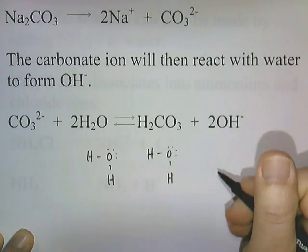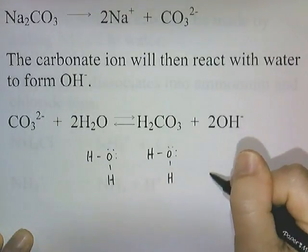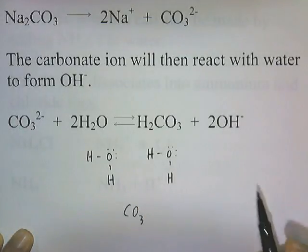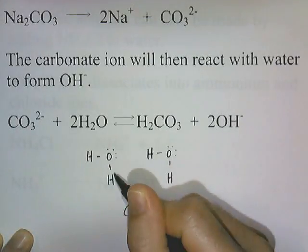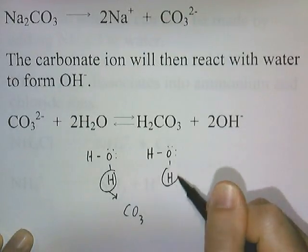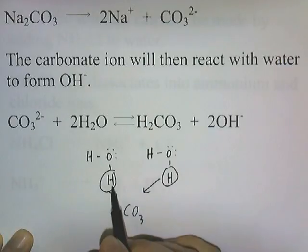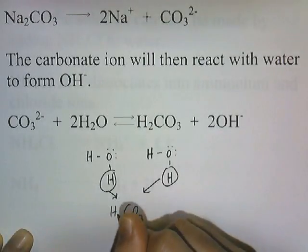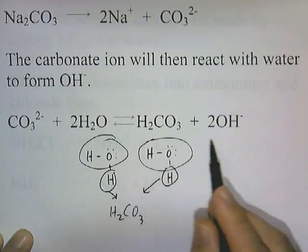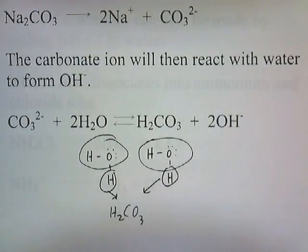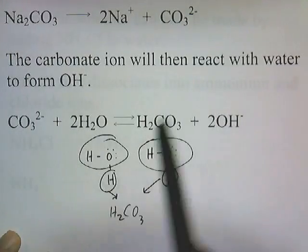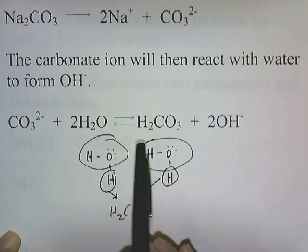The carbonate steals a hydrogen, and then steals another hydrogen, forming H2CO3 and leaving behind two hydroxides. That's how sodium carbonate, when placed in water, produces hydroxides.